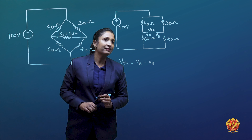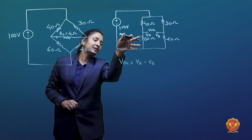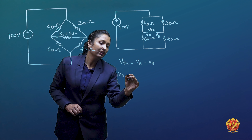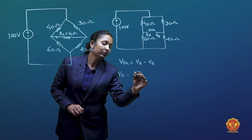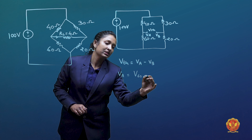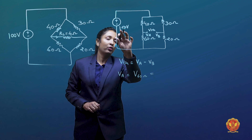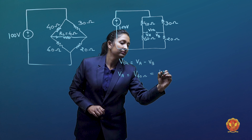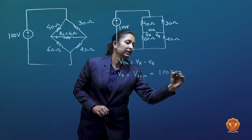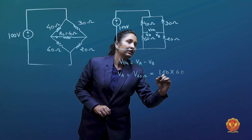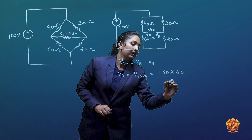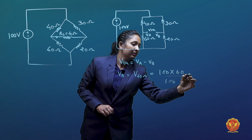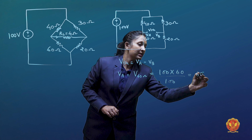What is Va? Va is the voltage across the 60 ohm resistance. Va is equal to, according to voltage division, 100 volts multiplied by 60 divided by 100, that is 40 plus 60, which is equal to 60 volts.